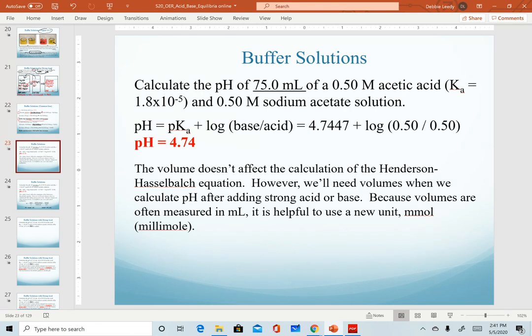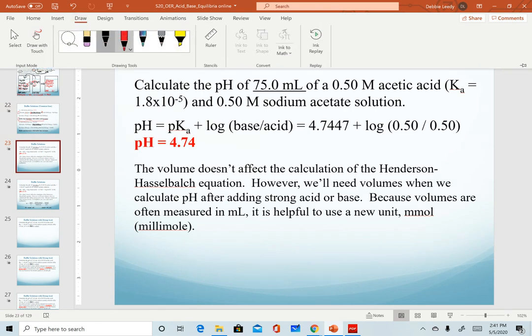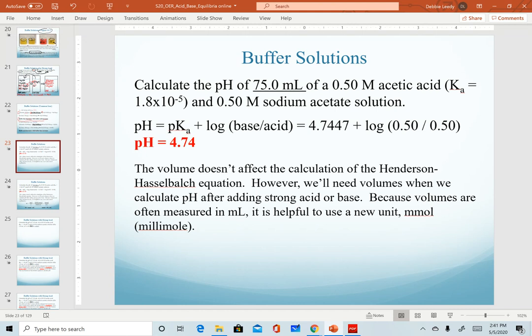So now we want to determine how we will calculate this new pH. Before we get into that, I want to introduce a new unit. This is going to be our main problem: calculate the pH of 75.0 milliliters of 0.50 molar acetic acid and 0.50 molar sodium acetate solution. We effectively already did this - in the Henderson-Hasselbalch equation, these are listed as concentrations. Since we already had concentrations, that's all we need to use here. For this example, we don't need to use volume. However, we will need volumes when we add our strong acid or strong base.